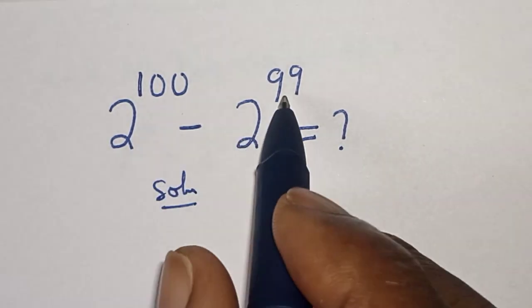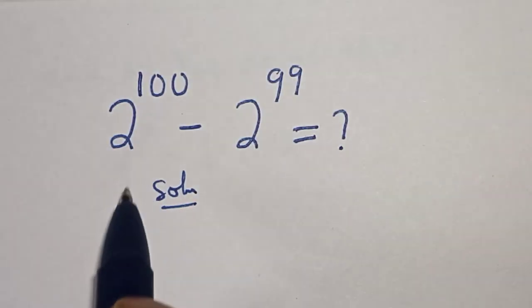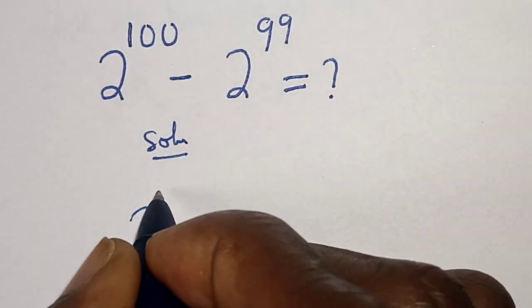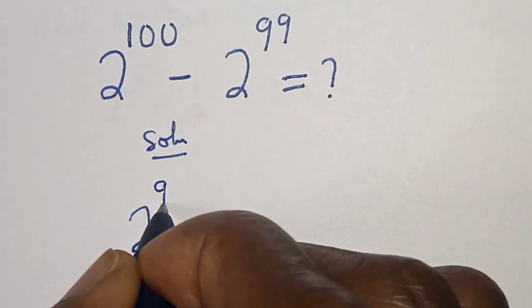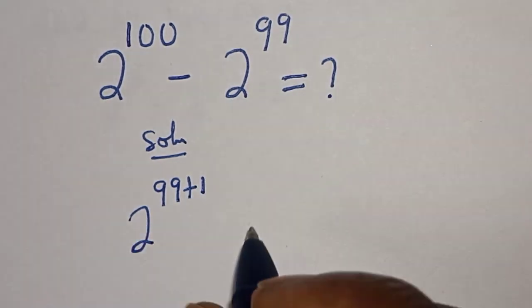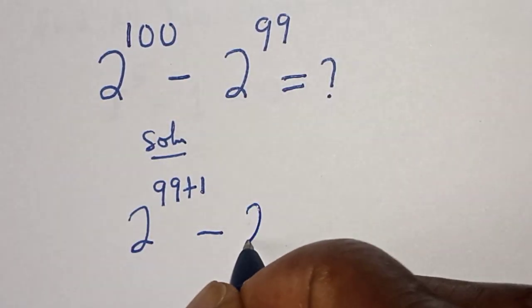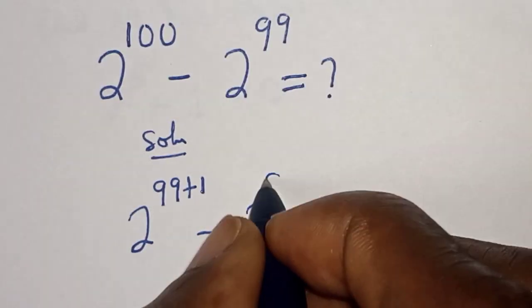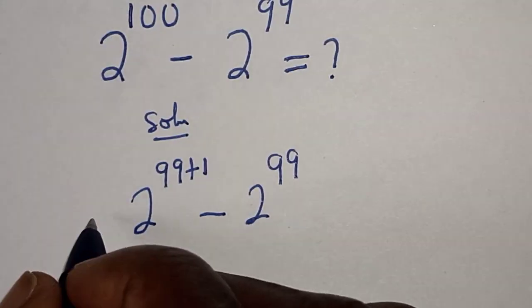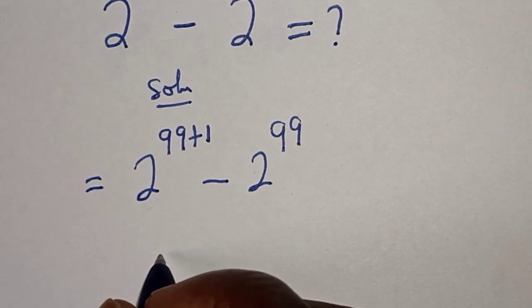2 raised to power 100 can be written as 2 to the power of 99 plus 1, minus 2 to the power of 99. Then remember this rule: